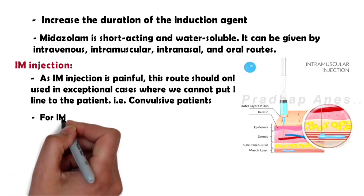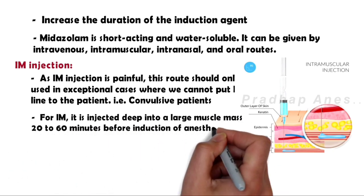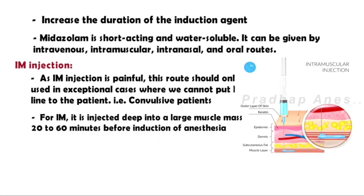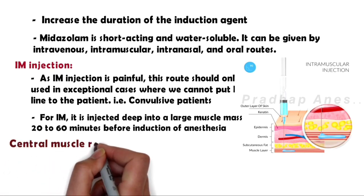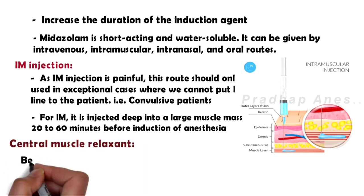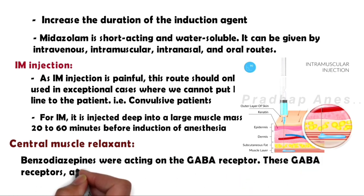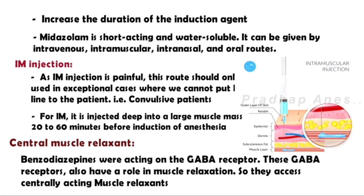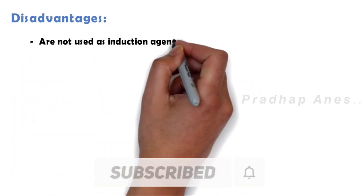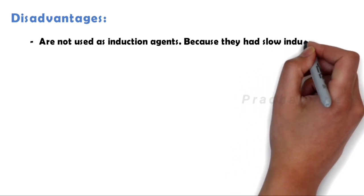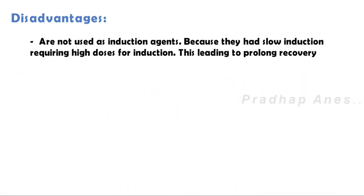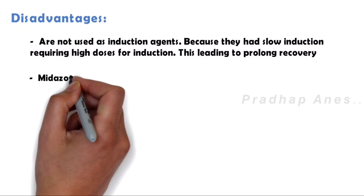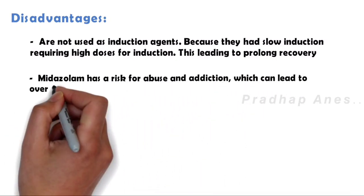For him it is injected deep into a large muscle mass 20 to 60 minutes before induction of anesthesia. Central muscle relaxant: Benzodiazepines act on the GABA receptor. These GABA receptors also have a role in muscle relaxation, so they act as centrally acting muscle relaxants. Disadvantages: They are not used as induction agents because they have slow induction requiring high doses for induction, leading to prolonged recovery. Midazolam has a risk for abuse and addiction which can lead to overdose and death.